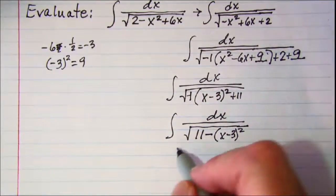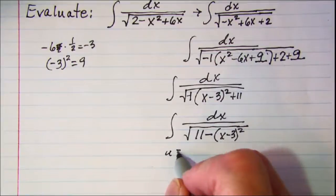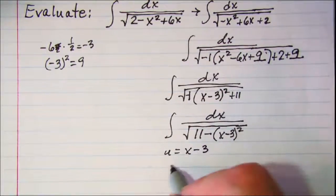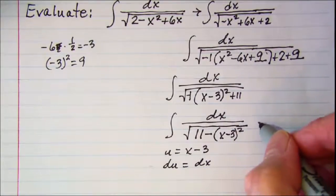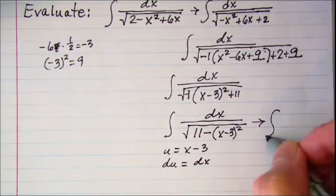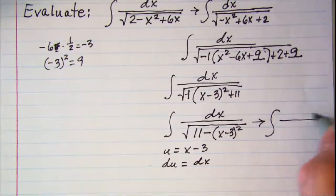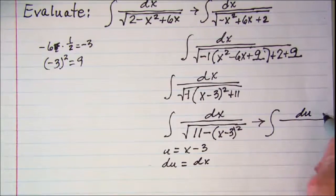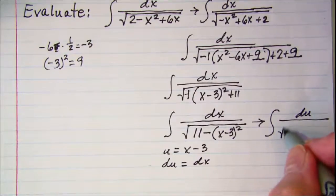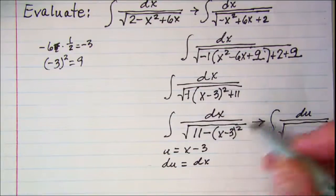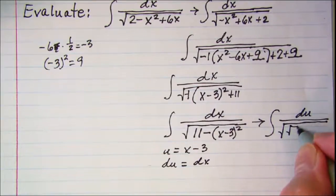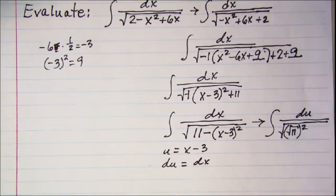Let's do a u substitution. u is equal to x minus 3 so du is equal to dx. So this is actually the integral of du on the top here and then square root of, and then this needs to be a constant squared so I'll need to rewrite that as square root of 11 squared and then minus u squared.